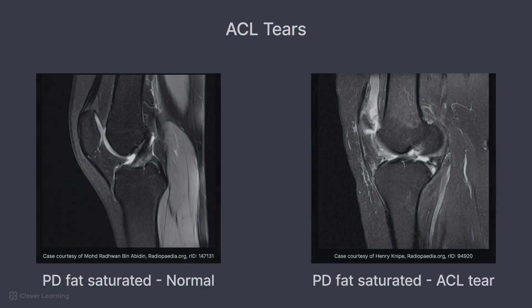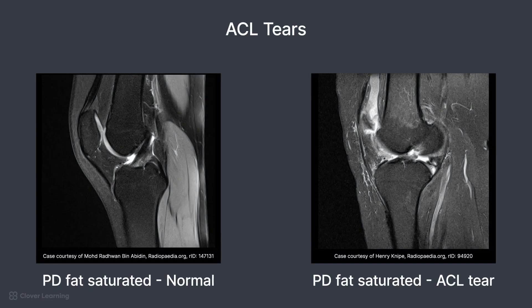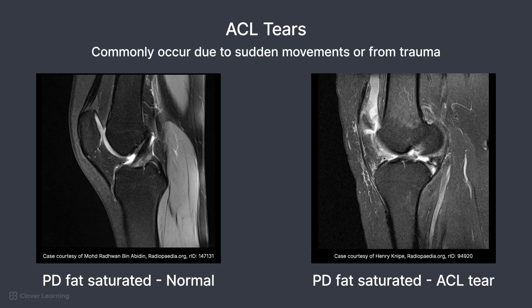Now let's look at the anterior cruciate ligament, or ACL. ACL tears commonly occur during sports involving pivoting or sudden stops like soccer or basketball, or from direct trauma. On MRI, a normal ACL appears as a low-signal diagonal band connecting the femur to the tibia on sagittal images. Tears manifest as discontinuity or high signal disruption on T2 or PD-weighted images, often with bone bruising in the lateral femoral condyle or tibial plateau.